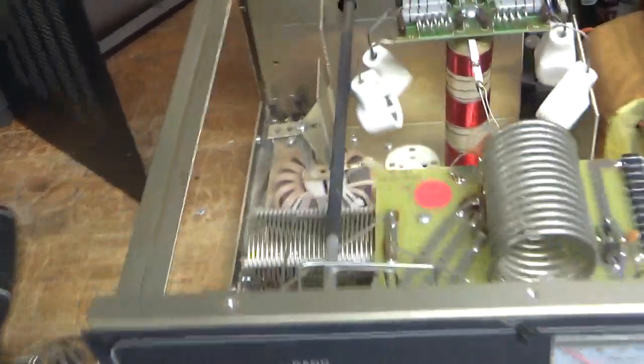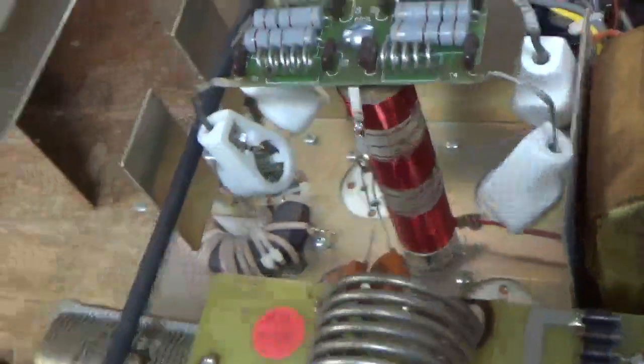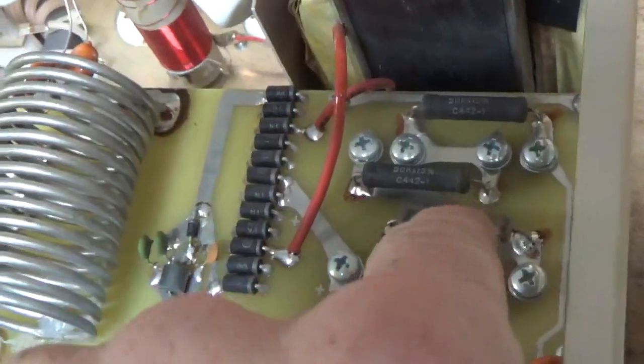This one also has the grid loading resistor setup, so I'll remove those. It's cracked. Customer said that tube flashed. Let me check the resistor. Looks kind of funky over here. Check the values of all four.